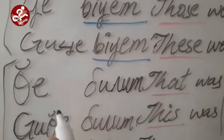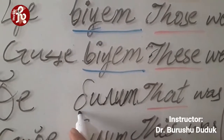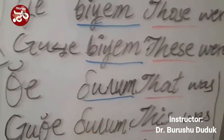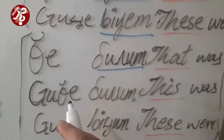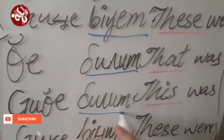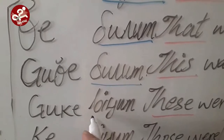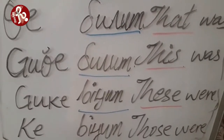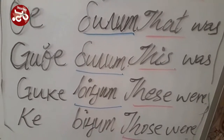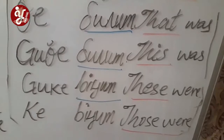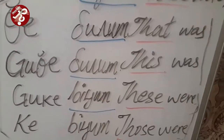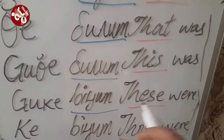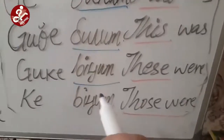Te Dulum is used for a non-living being that is fluid, soft material, cloth, water, or something like that — Te Dulum means 'that was'. Gute Dulum means 'this was'. Guke Bichum means 'these were' — for example, you will use it for soil or wood. Hun Bichum or Tik Bichum means 'there was soil' or 'there were woods'. For anything plural, you will use Bichum.